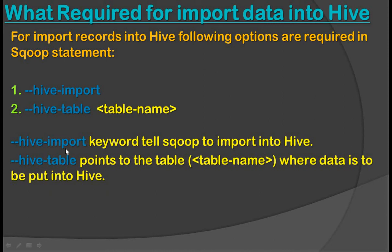The double-hyphen hive-import keyword tells Sqoop to import into Hive, and double-hyphen hive-table points to the table where data is to be stored in Hive. When we specify double-hyphen hive-table with a table name, it specifies which Hive table we are going to store data into from RDBMS.